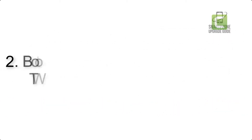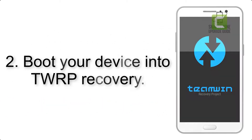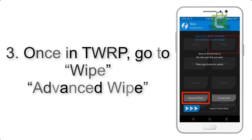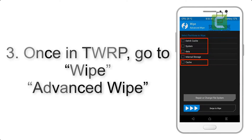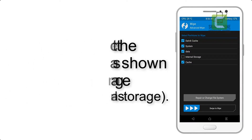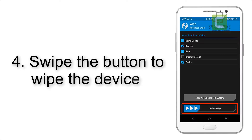Step 2: Boot your device into TWRP recovery. Once in TWRP, click on Wipe, then Advanced Wipe, and select the checkboxes as shown in the image, excluding internal storage. Step 4: Swipe the button to wipe the device.